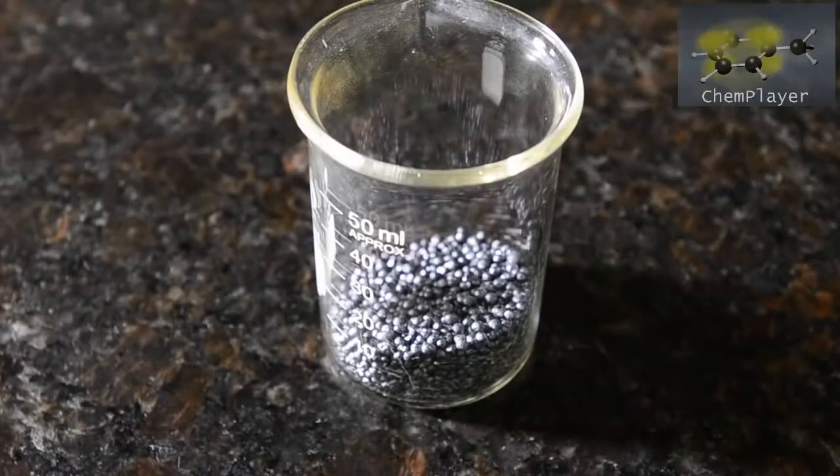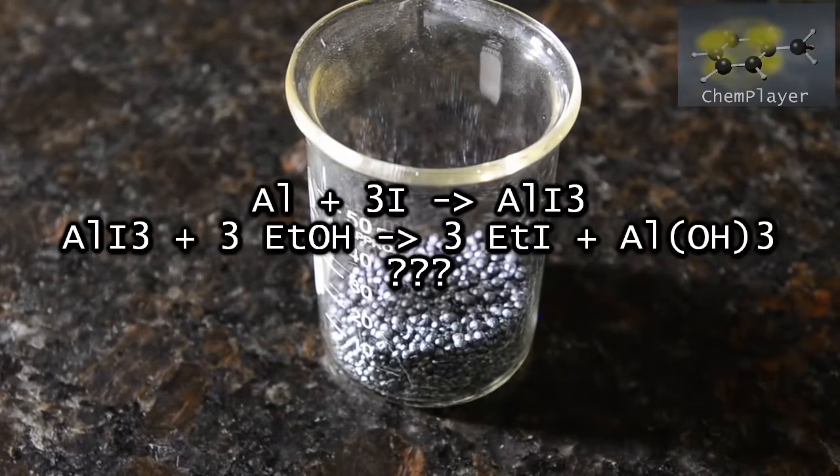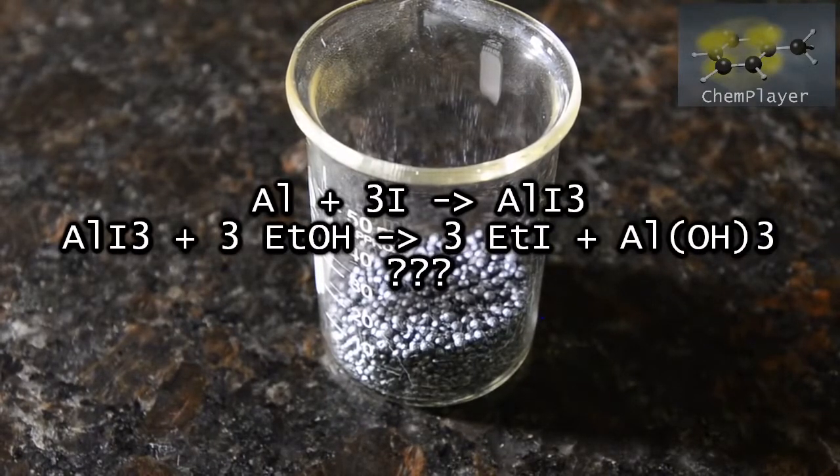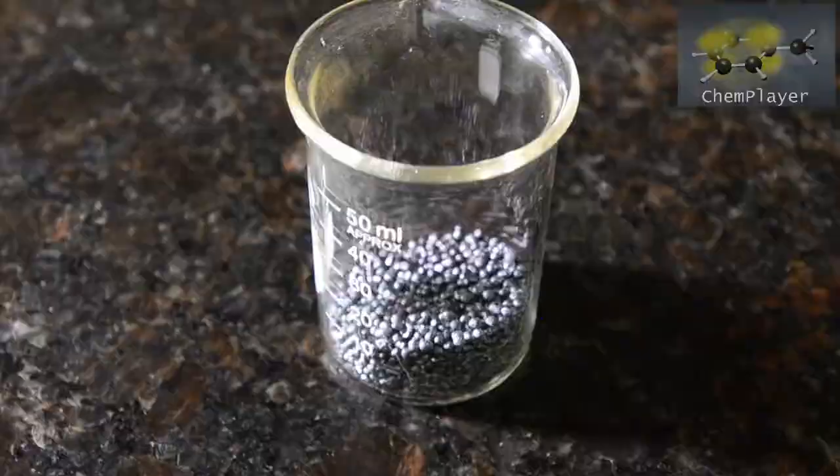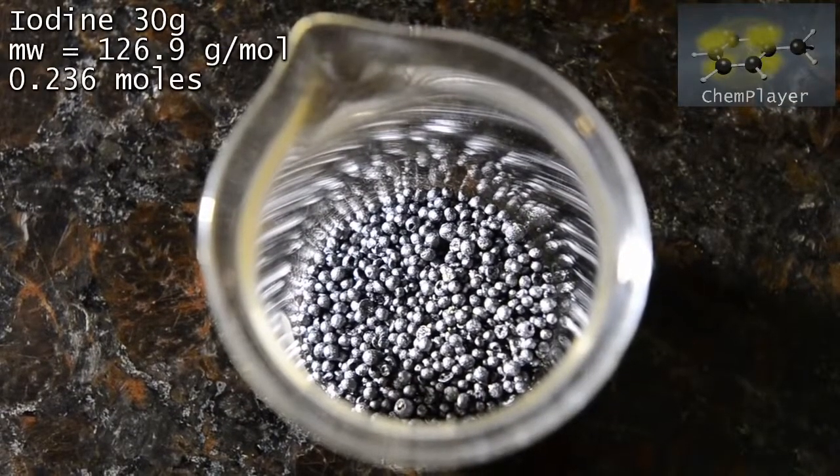In this video we're going to try out an unusual preparation of ethyl iodide. The classic preparation covered in our other video uses iodine and red phosphorus, but we heard that it was also possible using iodine and aluminum metal.